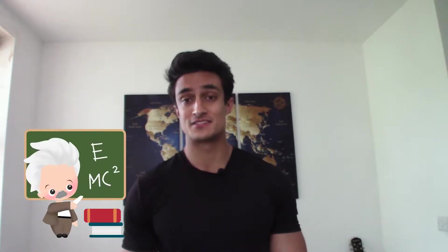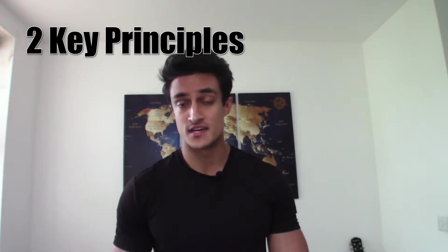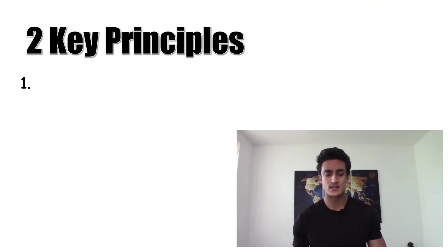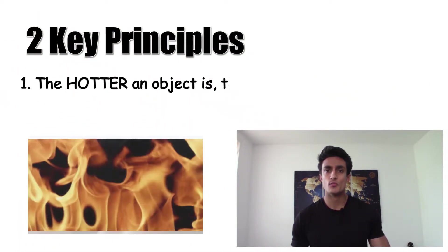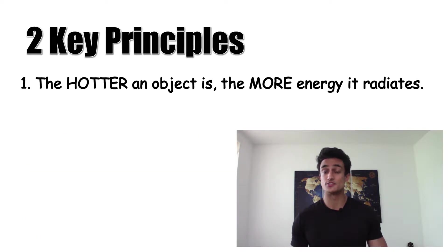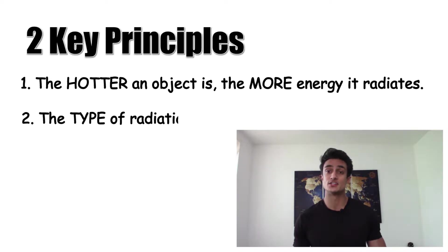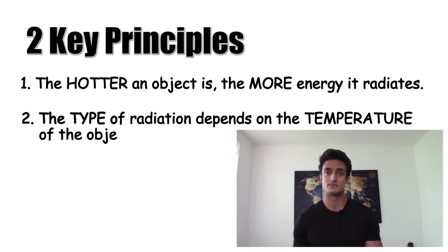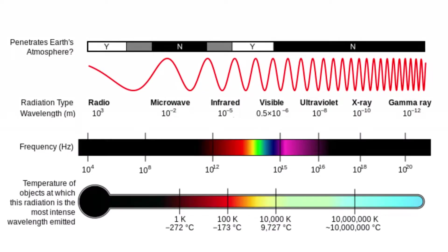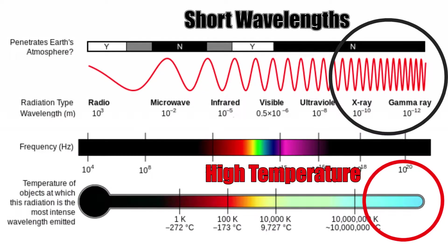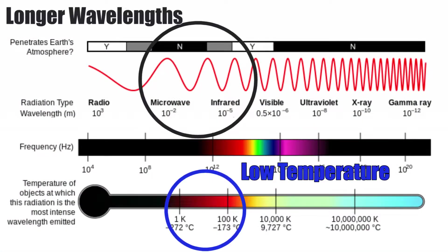Now for a little physics. There are two key principles to understand here. The first is that the hotter an object is, the more energy it will radiate or lose in a given period of time. And the second is that the type of radiation emitted by an object depends on its temperature. The hottest things in the universe emit radiation with very short wavelengths like gamma rays and x-rays. Cooler objects emit radiation mostly with much longer wavelengths, such as visible light, infrared, radio waves and microwaves.